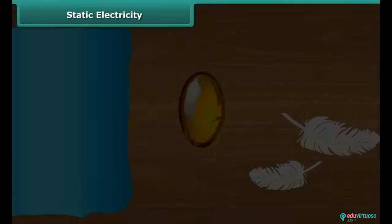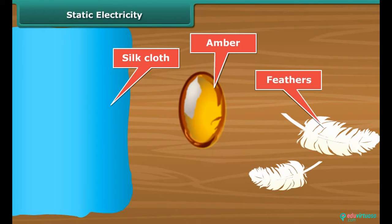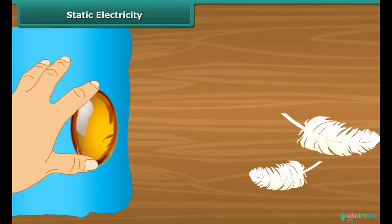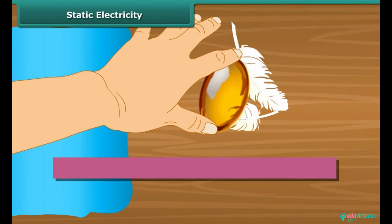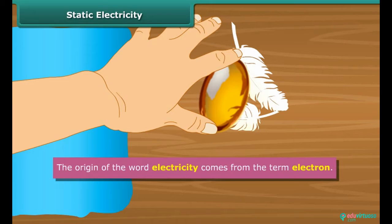Thales found that amber attracted tiny feathers after it was rubbed with silk cloth. This was due to static electricity. The origin of the word electricity comes from the term electron.